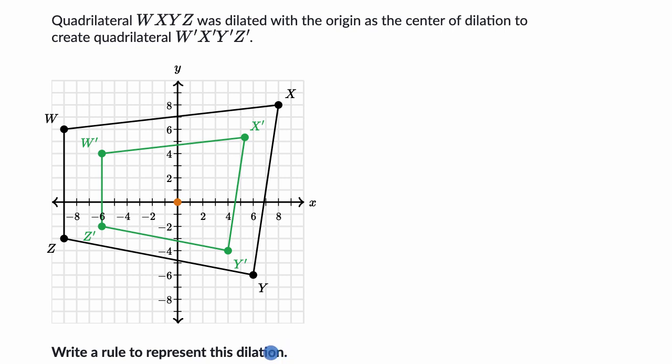So like always, pause the video and have a go at it on your own before we do this together. All right, so let's just remind ourselves what a rule that represents a dilation even looks like. You take any xy coordinate on the original shape and it's going to get mapped to another xy coordinate on the new shape. It's going to be scaled in the x direction by k and scaled in the y direction by k. So the key is we have to figure out what this scaling factor actually is.